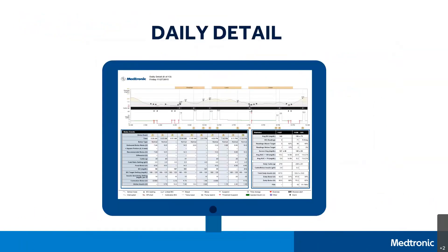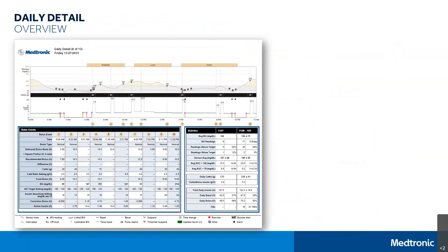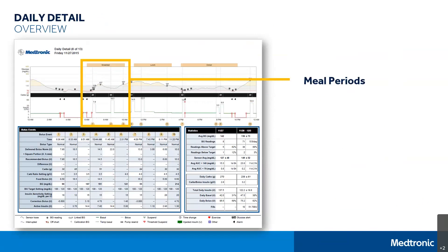The next report I want to look at is the Daily Detail. This report is helpful for identifying patterns and helping you understand what could be causing a high or low. This is not something you would look at every day, as it would create a lot of pages in your report. However, if you want to look at one particular day, use this report. The areas to look at for insight are the meal periods and the statistics section.